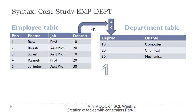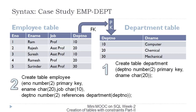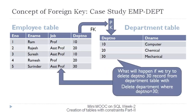Now let us implement a foreign key on the employee-department database. The first step is to create the master department table, where department number is the primary key. The second step is to create the employee table, where department number is the foreign key and it refers to the department table's department number for validating its value.